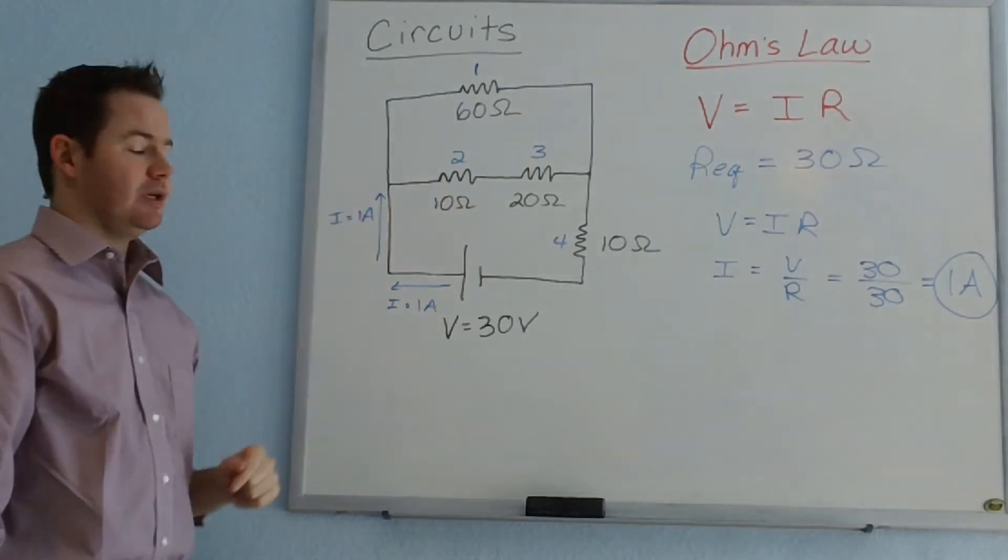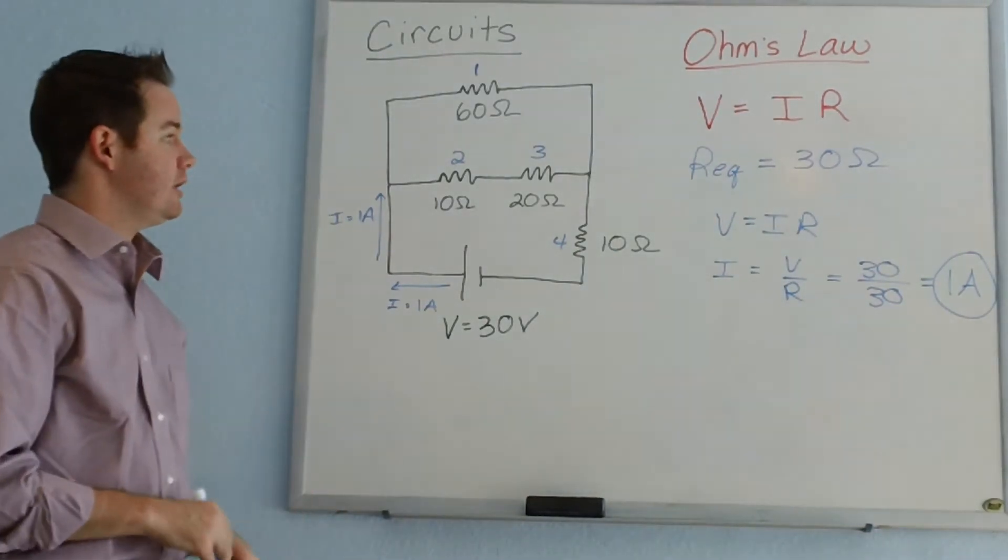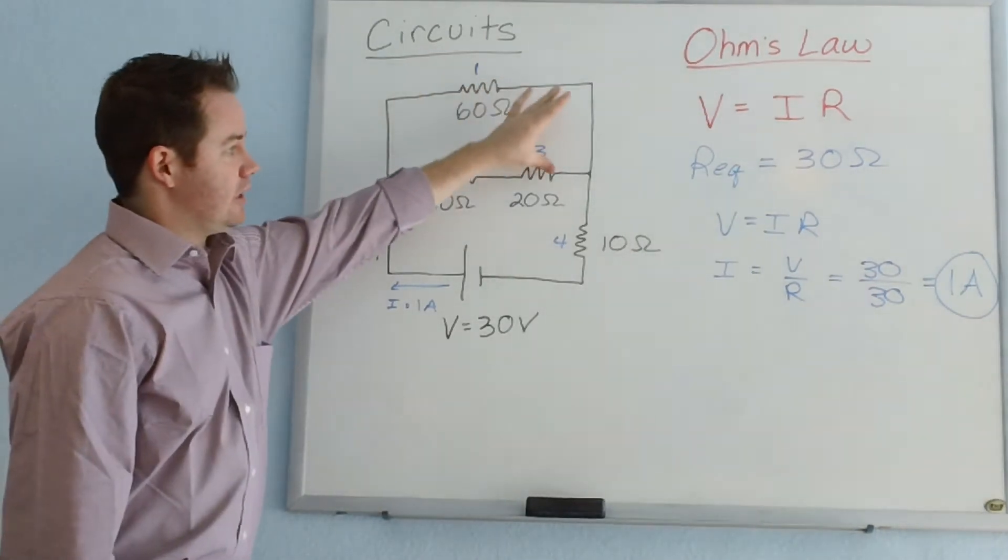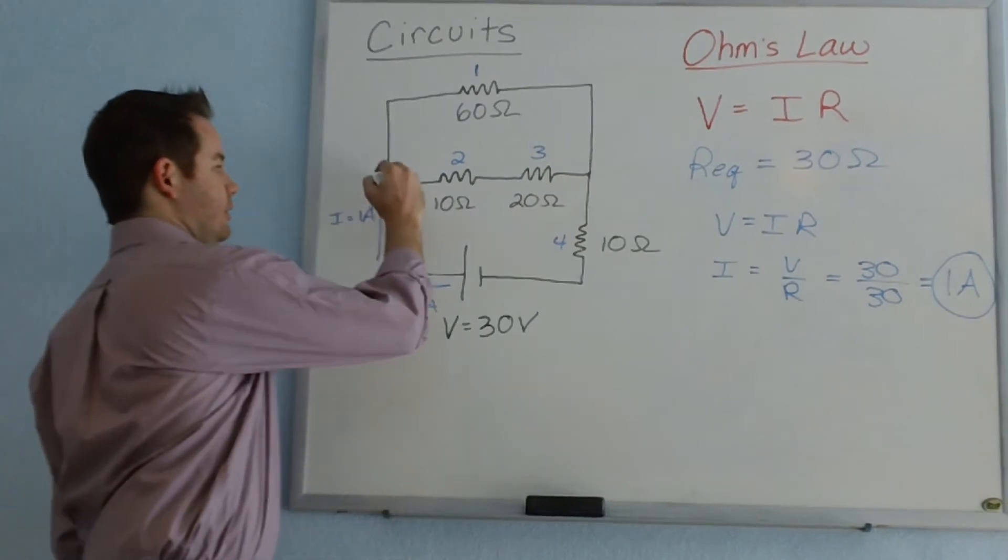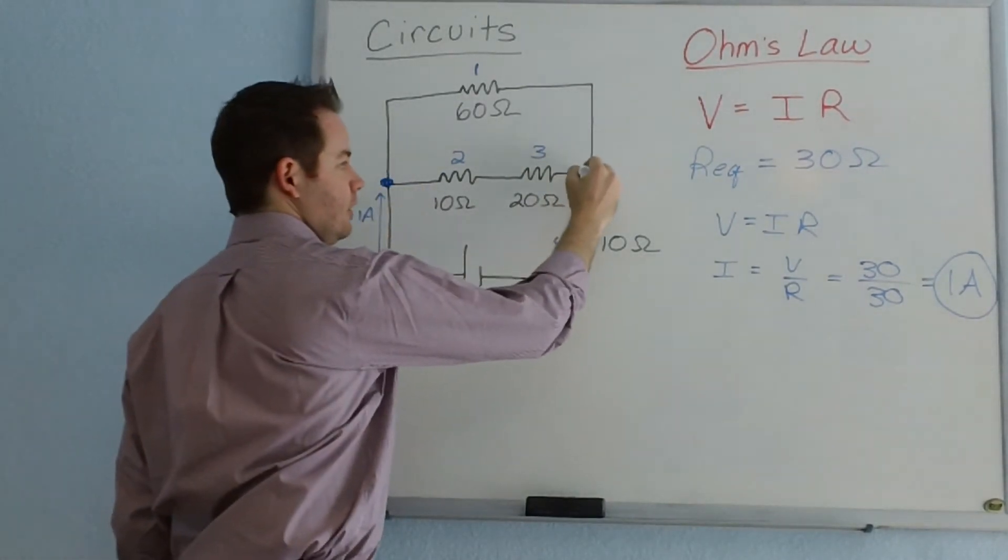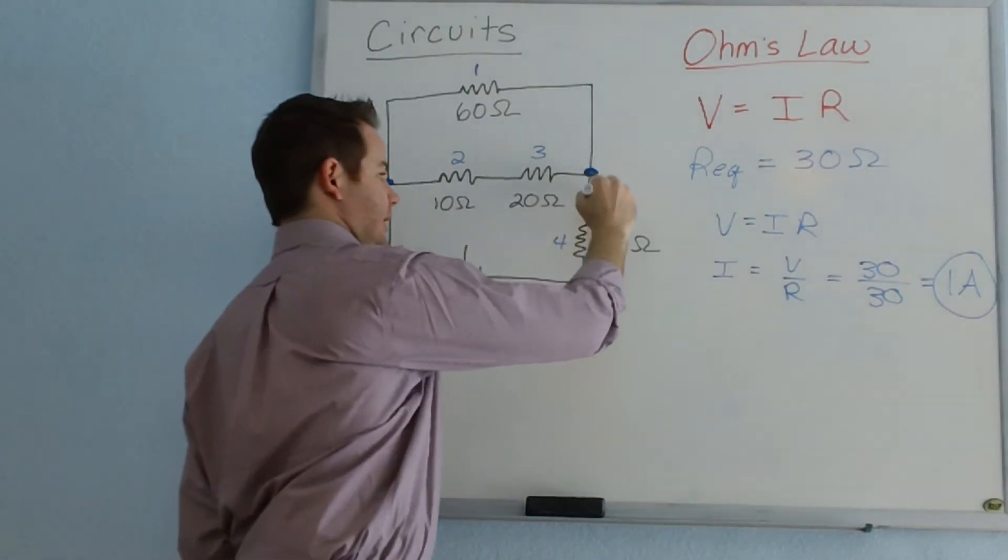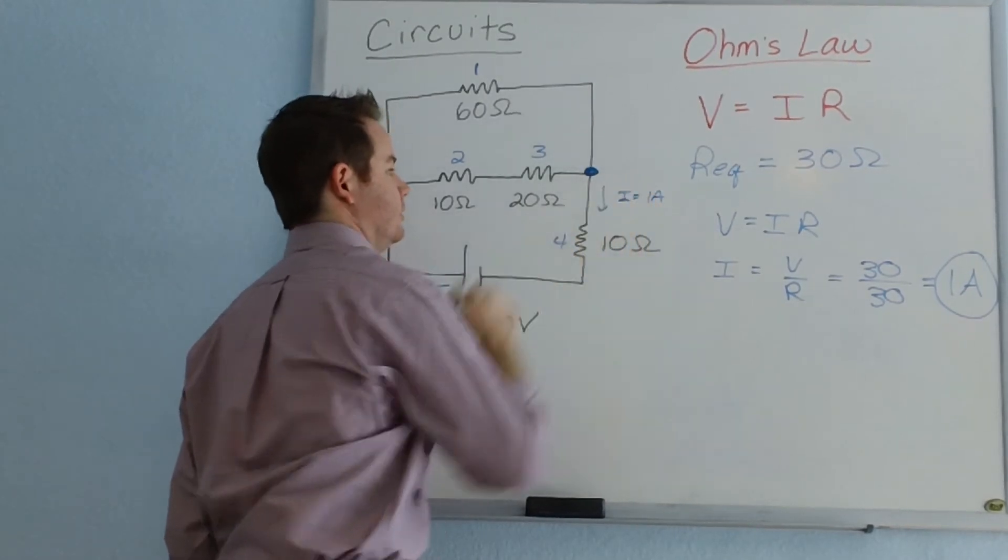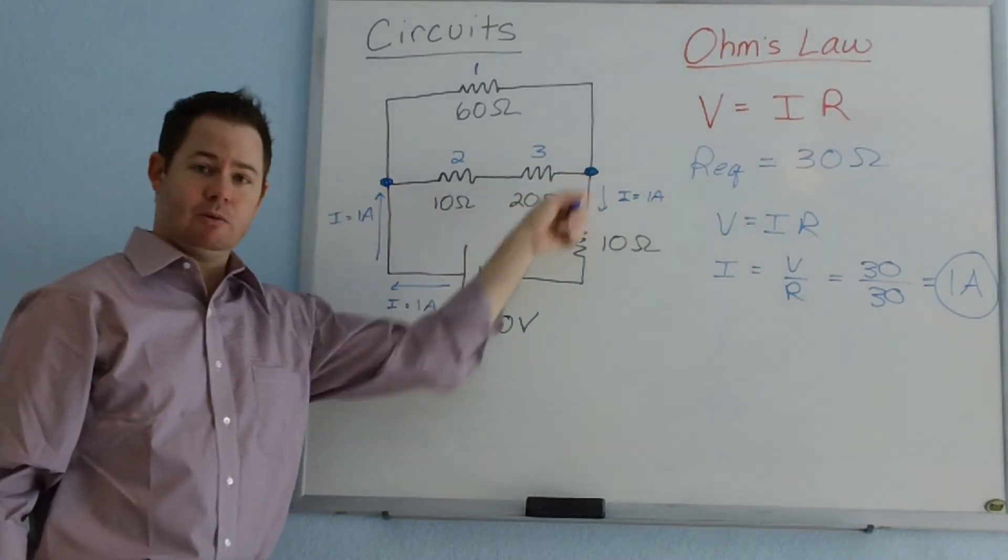As one of Kirchhoff's rules, when your current divides, two currents will go down these two branches of our loop, but it will come back together at this point over here. So the current will split at this junction but then your current will rejoin at this junction, and the current passing through here will be equal to 1 amp as well. The same amount of total current that we have entering the junction is the amount of current that we will have exiting that intersection and passing through resistor 4.